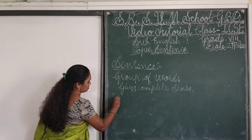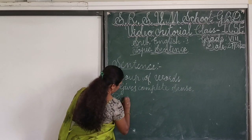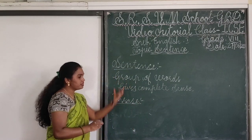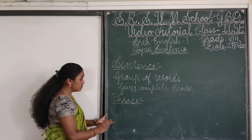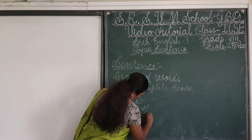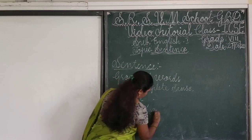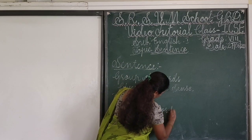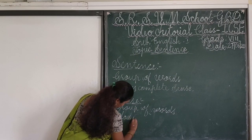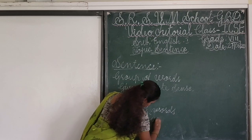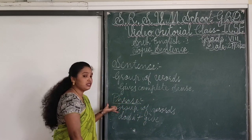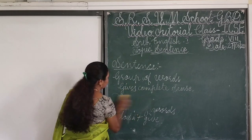Let me go about phrase. A phrase is also a group of words, but it does not give complete sense. So, a group of words which does not give the complete sense is called a phrase. Let us learn more about the phrase in next classes. So, let me go deep into the sentence today.